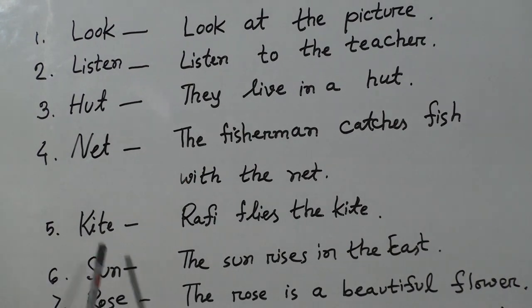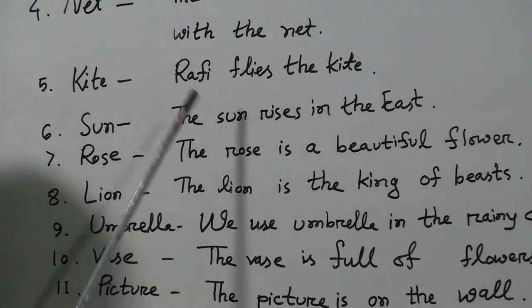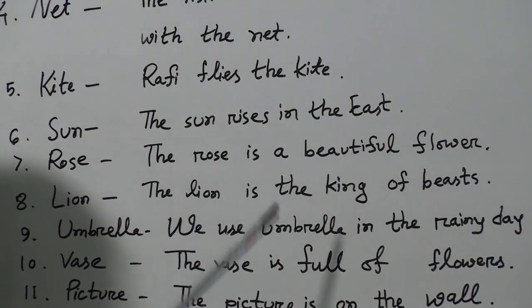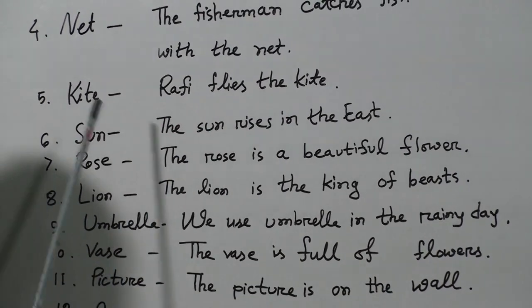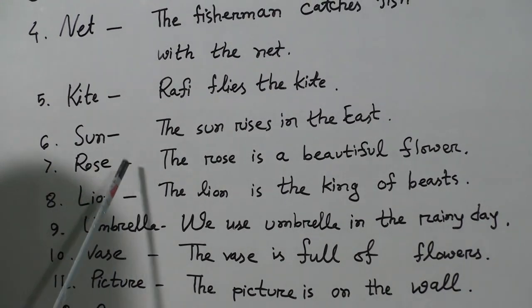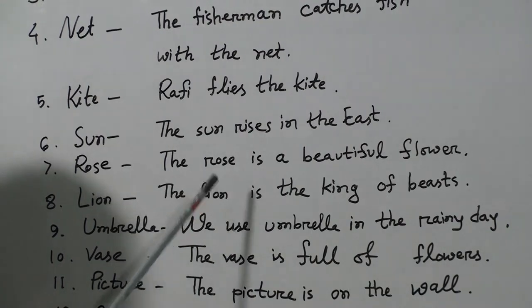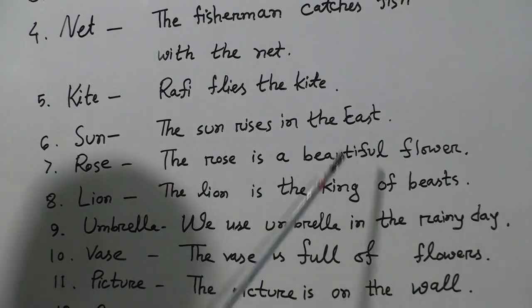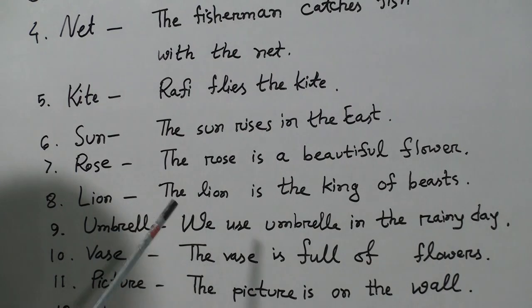Kite. Kite māne ghuri. Raffi flies the kite. Sun. Sun māne hauché shūrja. The sun rises in the east. Shūrja pūrvodike u'the.